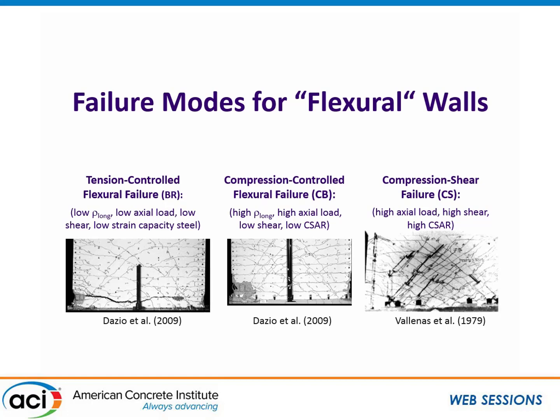There are also guidelines for squat walls, but most of my work was on flexural walls. Looking at experimental data, we realized there were essentially three different failure modes for a flexural wall: a tension-controlled failure where bars fracture, usually with light axial load or low longitudinal reinforcement ratios; a compression-controlled flexural failure with high axial load or lots of longitudinal reinforcement; and a compression-shear failure, usually with a very long cross section and high shear demand, possibly high axial load.